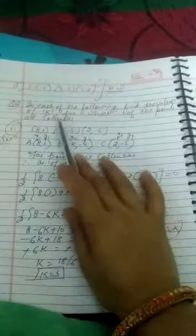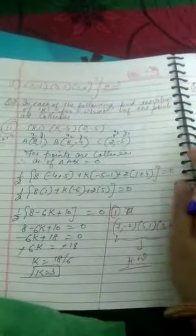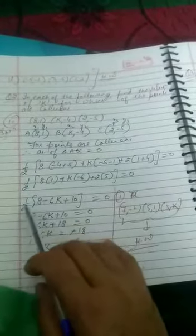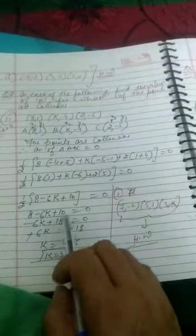Next part is, in each of the following find the value of k for which the points are collinear. Now, we have done points are collinear, which we will apply the same formula that is equal to 0. Again this is equal to 0, so this is half, there is 0, then we have minus 6k plus 10 that is equal to 0.